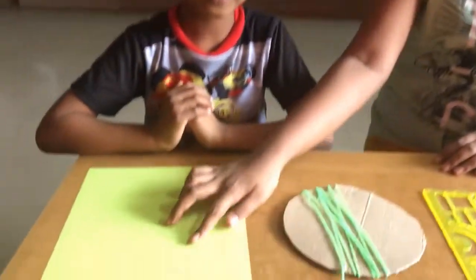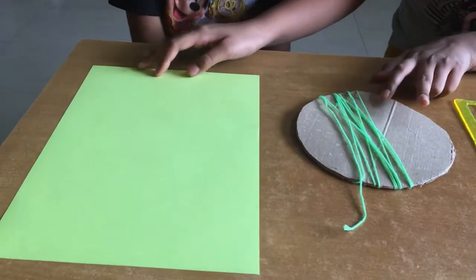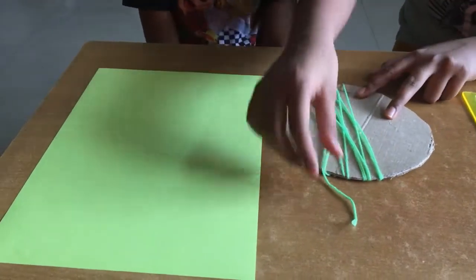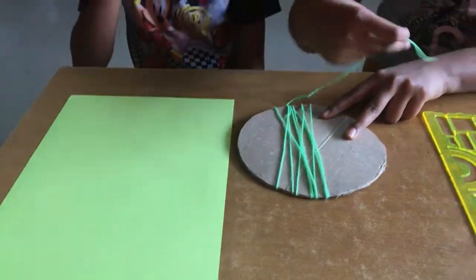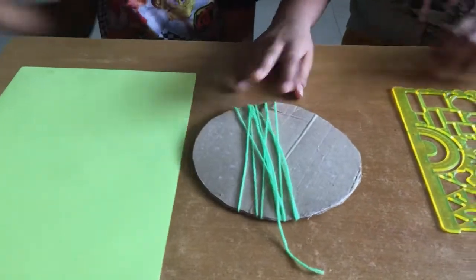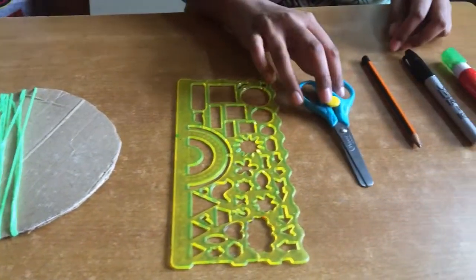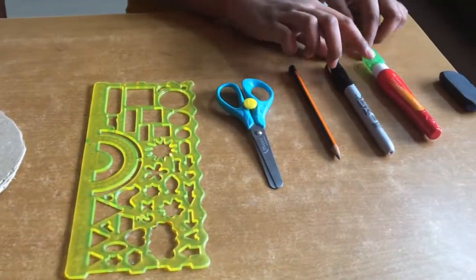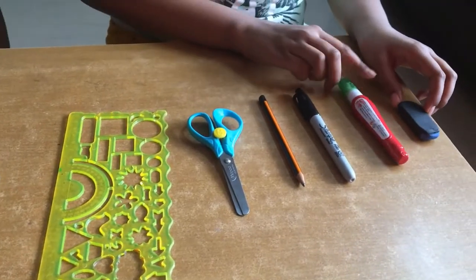So materials needed are one A4 sheet. I took a green A4 sheet so you should take green wool. Matching color should be there. Scale, scissors, pencil, black marker, whitener and eraser.